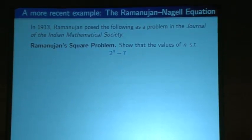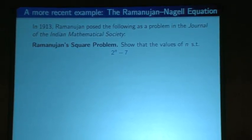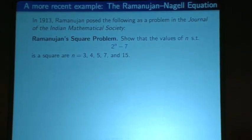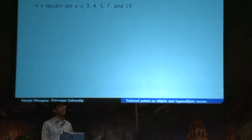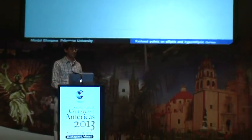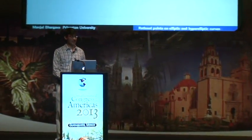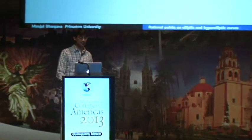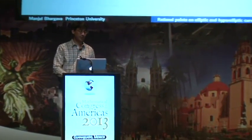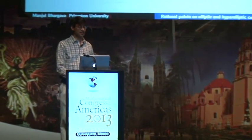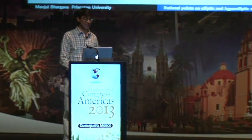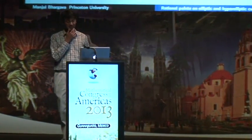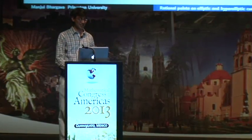The problem he posed was to show that all values of n such that 2ⁿ − 7 is a square are: 3, 4, 5, 7, and 15. You can verify these are indeed square values: 2³ − 7 = 1 = 1², 2⁴ − 7 = 9 = 3², 2⁵ − 7 = 25 = 5², 2⁷ − 7 = 121 = 11², and 2¹⁵ − 7 = 32,761 = 181².